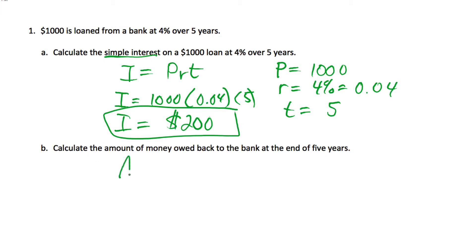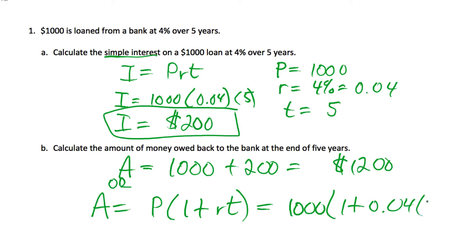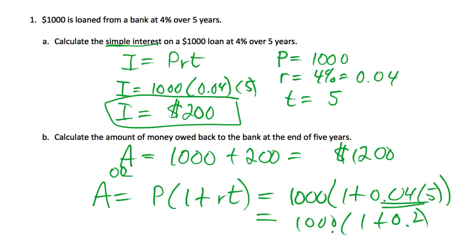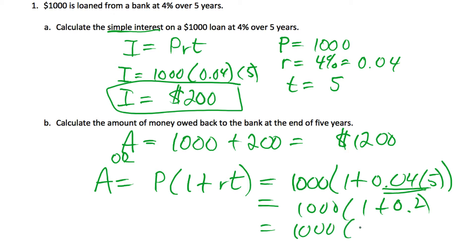And part B is asking us about the accumulated amount of money. So it's just the thousand that we borrowed plus the 200, which is our 1200. And we could certainly do that calculation using the other formula we just developed, P times 1 plus r times t. And so let's just do that to practice the formula. Plugging all the numbers in, that's 1000 times 1 plus 0.2, which is 1000 times 1.2, which gives us our $1,200.